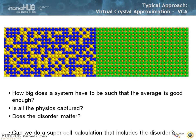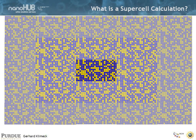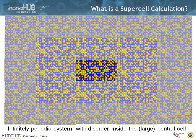This is typically done in materials science with a supercell calculation. What does that mean? You take a cell — one sample — and then you repeat it infinitely in all three directions. Then you calculate the eigenstates of this huge system, really out of that central cell that is infinitely periodic, and you try to come up with conclusions from that.